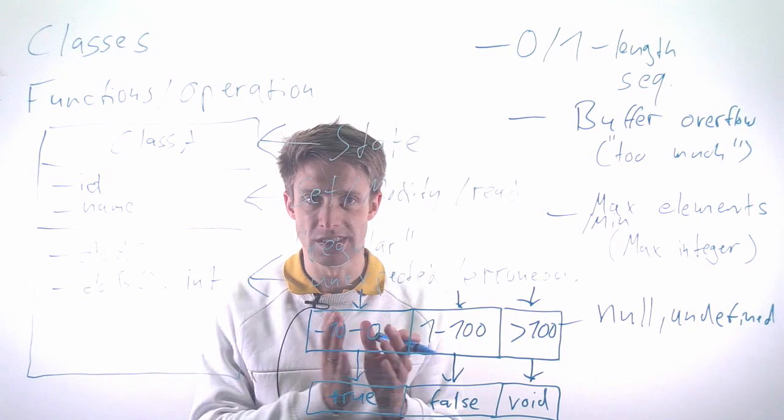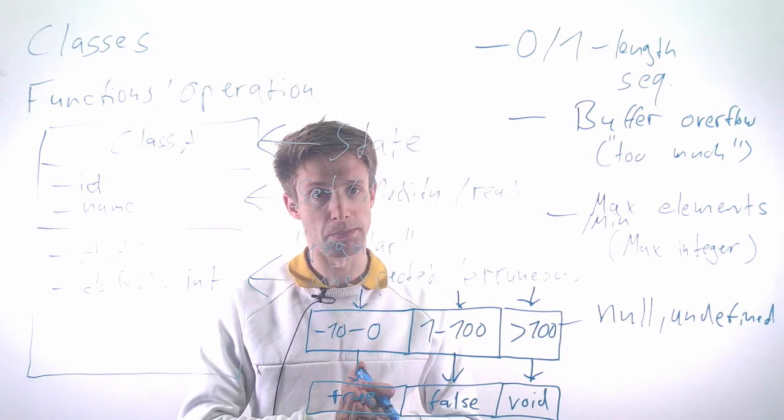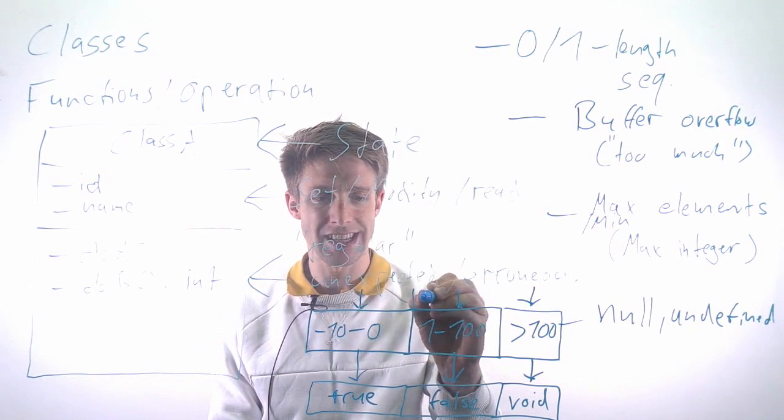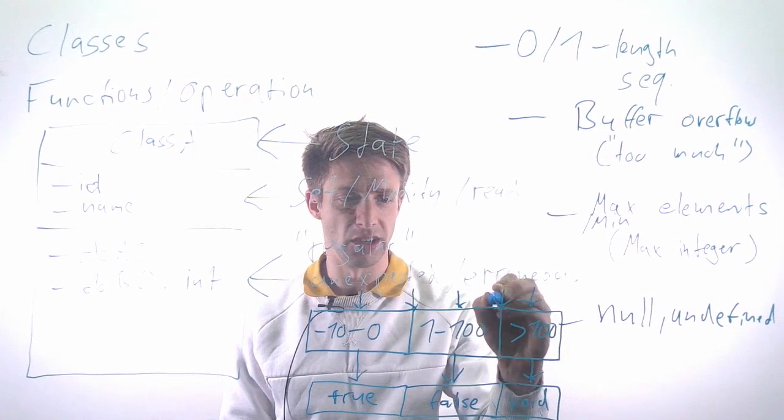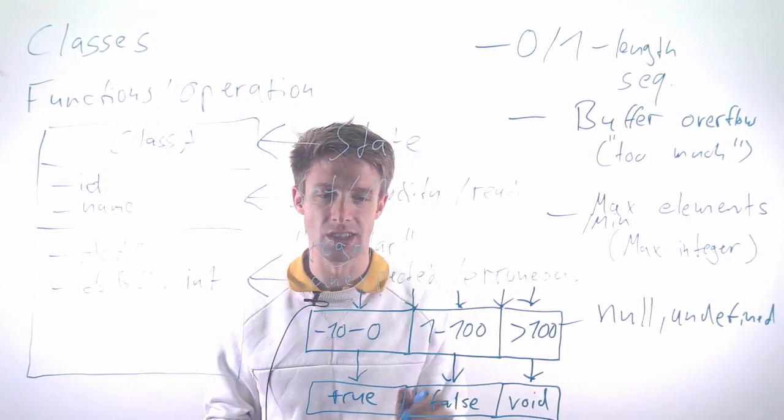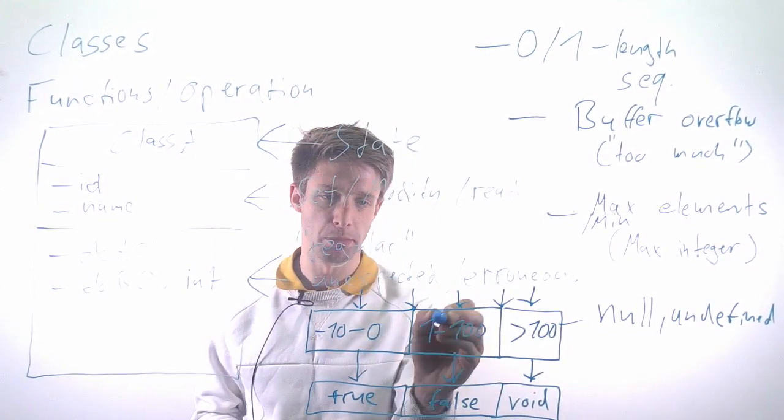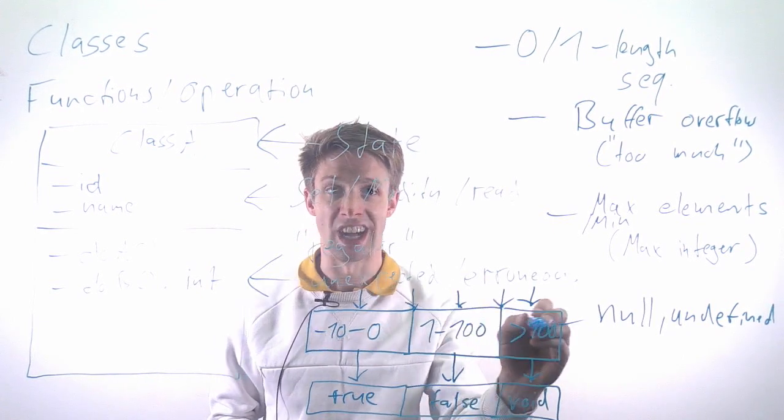Additionally, because errors happen very often at the edges of our partitions, we check the borders. How about we put 0 in, we put 1 in, we put 100, 101 in.